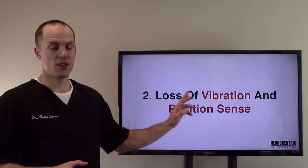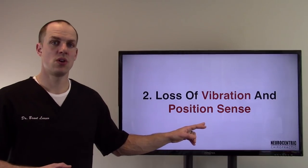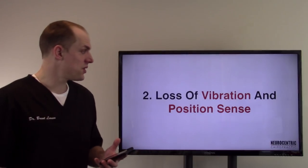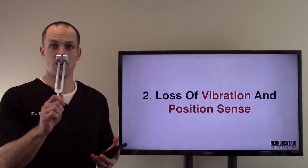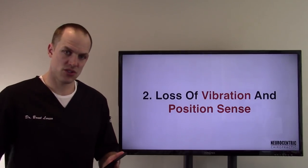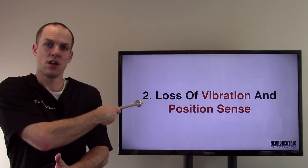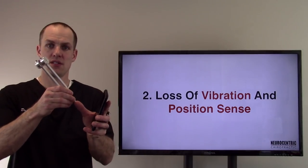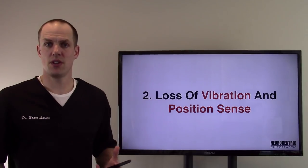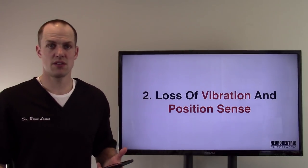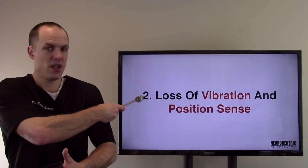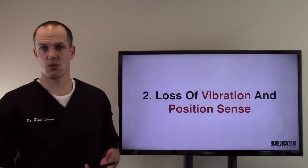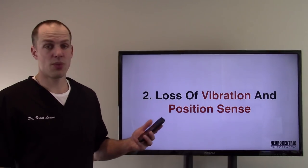Number two, loss of vibration and position sense. This has to do with testing your thumbs, your fingers, and your toes. Loss of vibration, what you do is you actually use a tuning fork. I strike it and I put it over here on my shoulder, I feel that sensation. I strike it and maybe I put it on the tip of my thumb. Does it feel the same? Or is there a drastic decrease in sensation? Maybe I strike it, put it here, then put it on the tip of my big toe, or compare left foot to right foot.